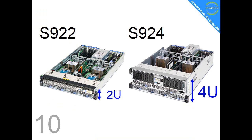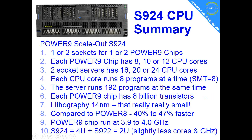Fact number ten: the S924 has a smaller brother, the S922. It's only 2U in a rack instead of 4U. This means we can't get quite as much airflow through the front with the fans, so the number of CPU cores goes down to 20 — but you do get twice as many computers in a rack.